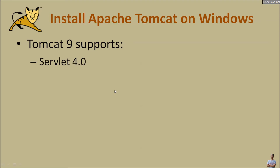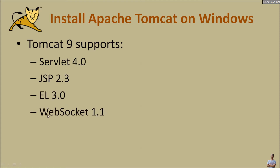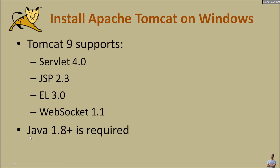Tomcat version 9 supports the following versions of Java technologies: Servlet 4.0, JSP 2.3, EL 3.0, and WebSocket version 1.1. Note that Apache Tomcat 9 requires Java version 1.8 or later installed on your computer. Before installing Apache Tomcat, make sure that you have Java Development Kit version 1.8 (Java 8) or newer installed on your computer.